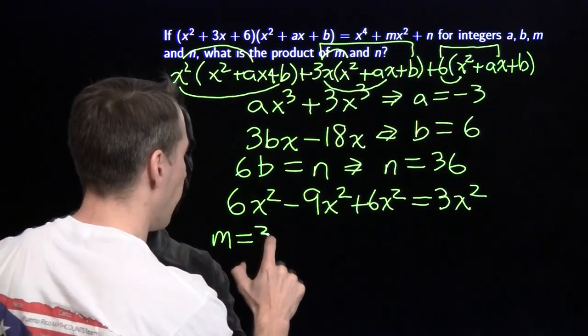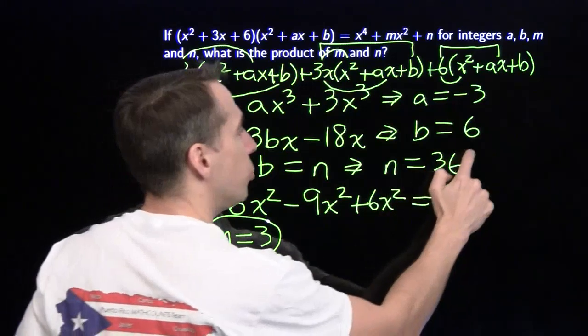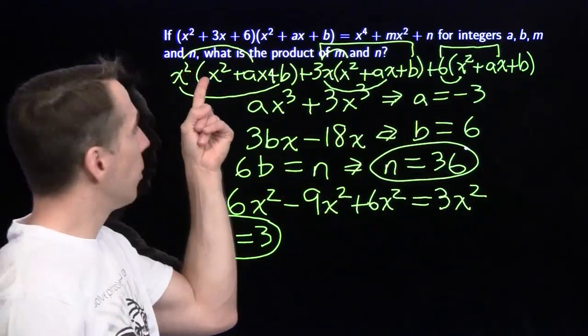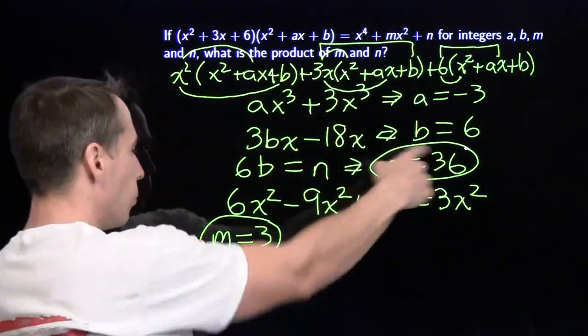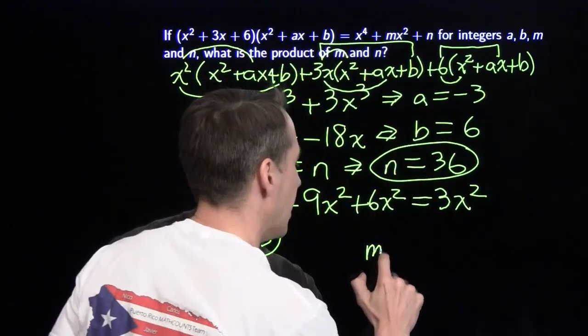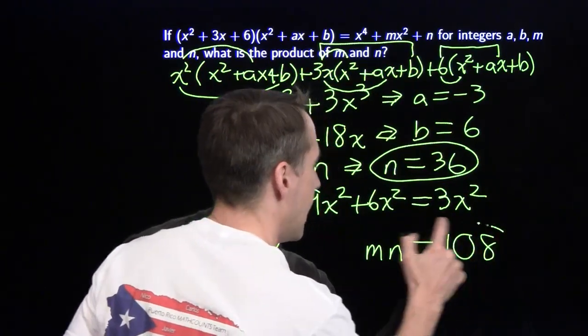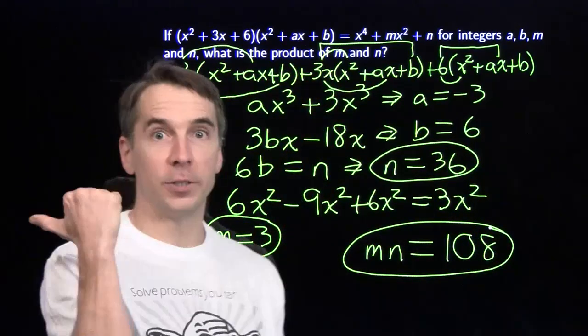So just like that, no fear. We pounded our way through the answer. We've got m and n. Now let's see. Read the problem at the end. Always important to read the problem. What is the product of m and n? We multiply these two together. We get m times n is 108. And we're on to the next problem.